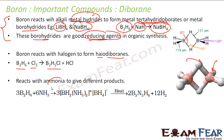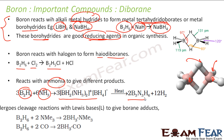Diborane also reacts with ammonia to give different products. Reacting B2H6 with ammonia gives one compound, and when you heat it further you get a different compound. So you get different products depending on the amount of heat applied.